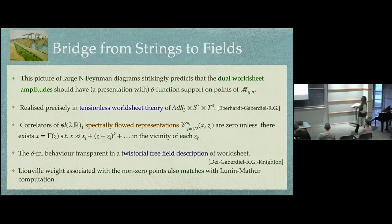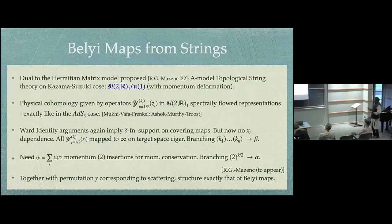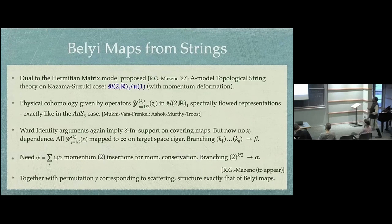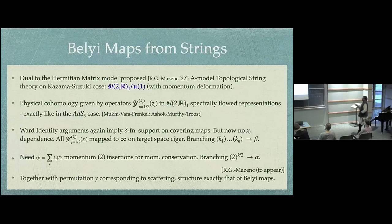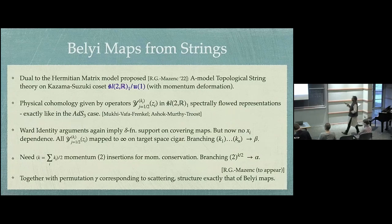There's an alternative way of viewing these delta functions through a twistor field description of the worldsheet where it becomes even more transparent. In this worldsheet description, one can also argue for the Lunin-Mathur weight associated to a Liouville factor for each covering map, given essentially by the Schwarzian — the absolute value of the Schwarzian of this covering map. For the Hermitian matrix model, the dual string theory is a twisted sigma model on the Kazama-Suzuki coset involving SL(2,R) modded out by U(1) — a cigar-like geometry — at level one, again a supersymmetric coset.